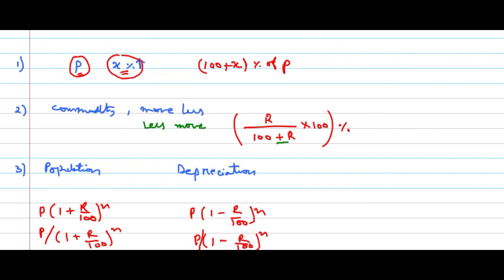For the commodity formula, if price is increased by R percent, plus comes; if reduced by R percent, minus comes. Please see the color coding. If A is more than B, then how much B is less than A — that uses plus. If it is less and more, then it will be minus. If you can remember these three formulae, that is sufficient; if you know one thing you can go ahead with another. It's very easy, please try to remember these formulae.